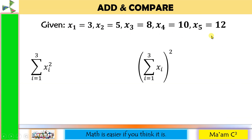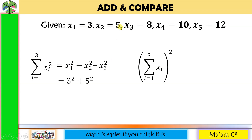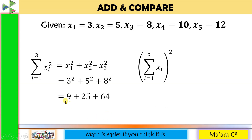Let us have another activity: Add and Compare. We have the same given. In the first expression, the exponent 2 is inside the summation — so we have X sub 1 squared plus X sub 2 squared plus X sub 3 squared, because the upper limit is 3. Substituting: 3 squared is 9, 5 squared is 25, and 8 squared is 64. 9 plus 25 is 34, and 34 plus 64 is 98.